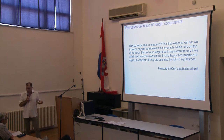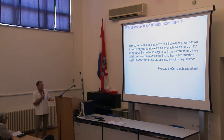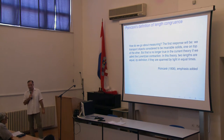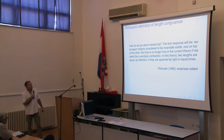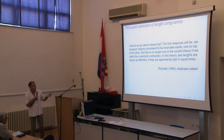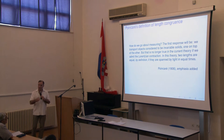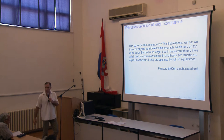Poincaré drew consequences from his theory of relativity concerning measurement. This is a direct quotation from his long memoir published in the Rendiconti del Circolo Matematico di Palermo in 1906, but actually written in July 1905, titled 'On the Dynamics of the Electron.' He writes: how do we go about measuring? The first response will be, we transport objects considered to be invariable solids, one on top of the other. But that is no longer true in the current theory. If we admit the Lorentzian contraction, two lengths are equal by definition if they are spanned by light in equal time.